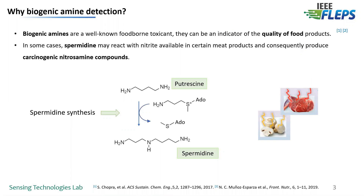Together with other biogenic amines like putrescine and cadaverine, spermidine can react with nitrates that are present in food and produce carcinogenic nitrosamine compounds. Therefore, their detection in food is extremely important.